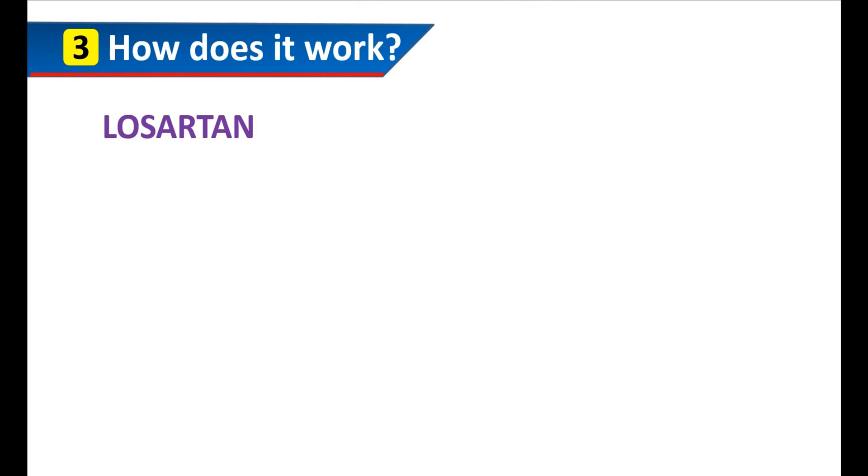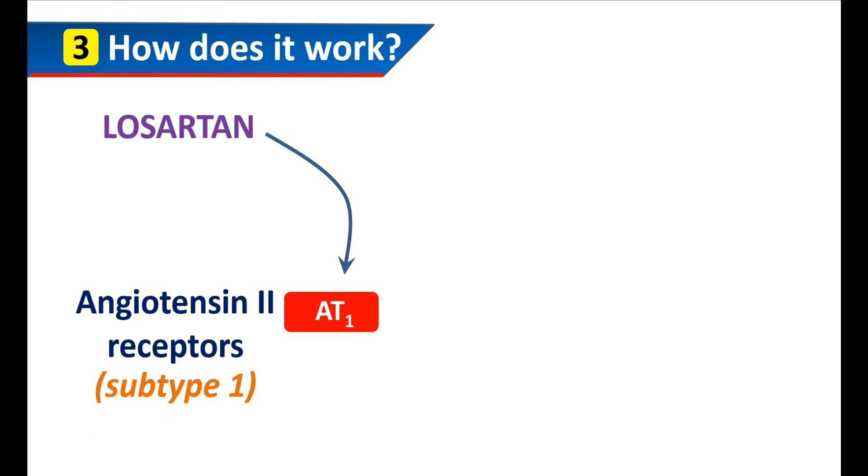How does it work? Losartan blocks the actions of angiotensin 2 receptors. Angiotensin 2 receptors can be classified into two subtypes, AT1 and AT2. Here, Losartan acts on subtype 1, which is denoted as AT1.